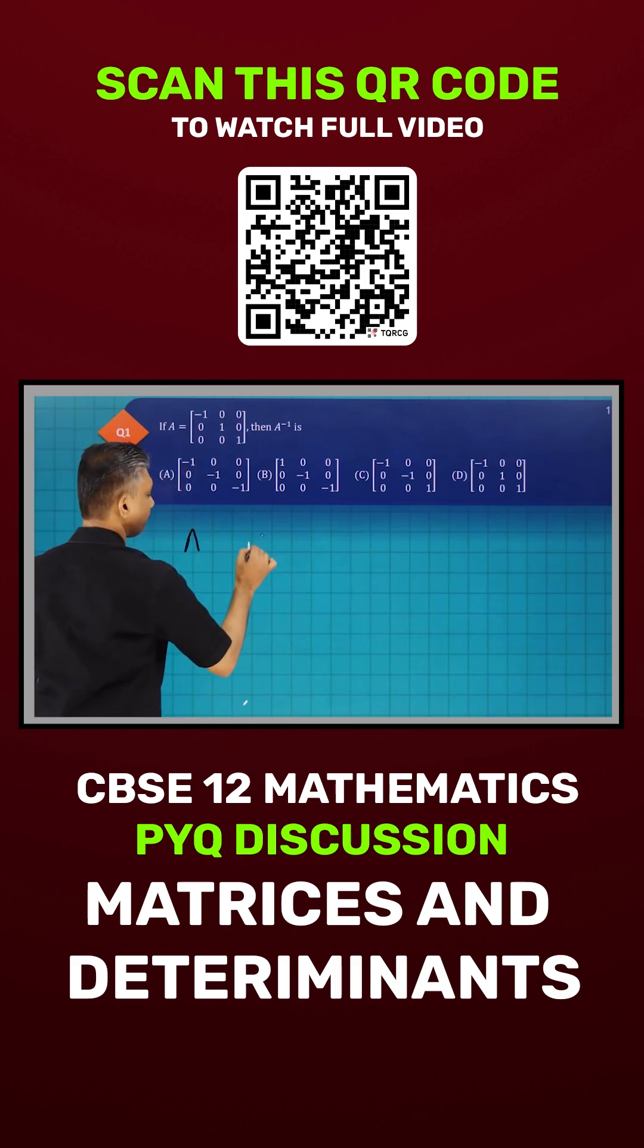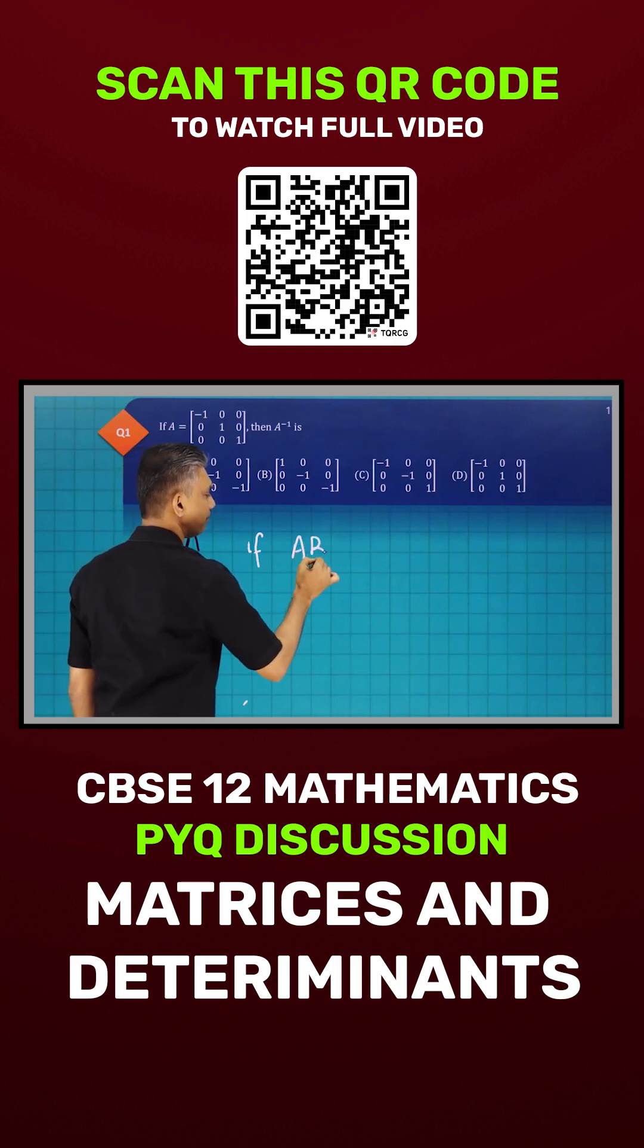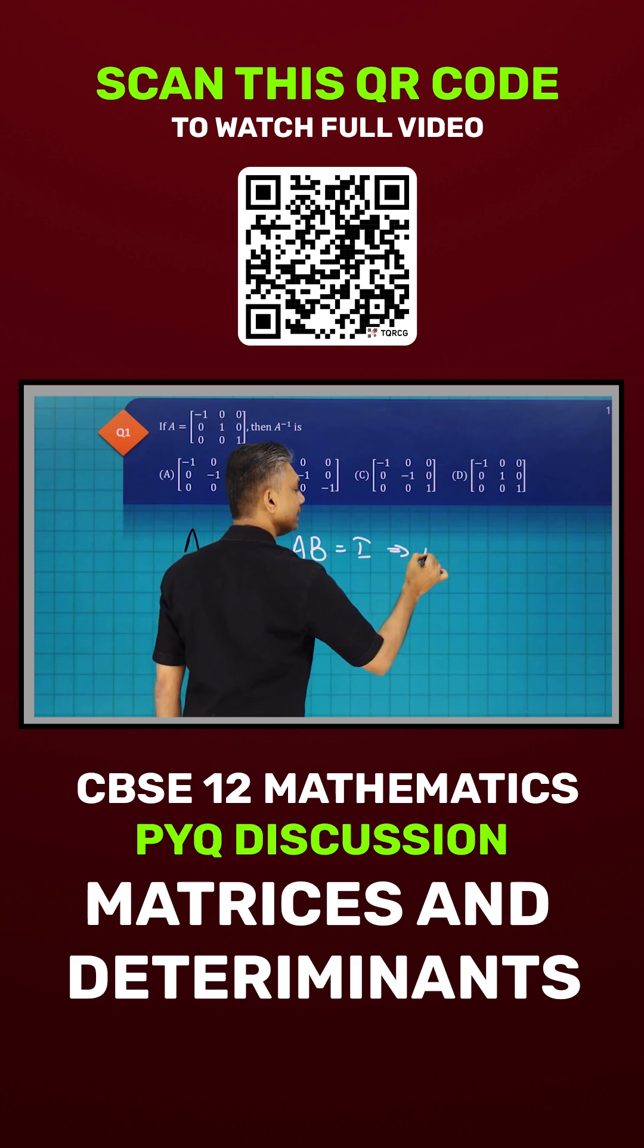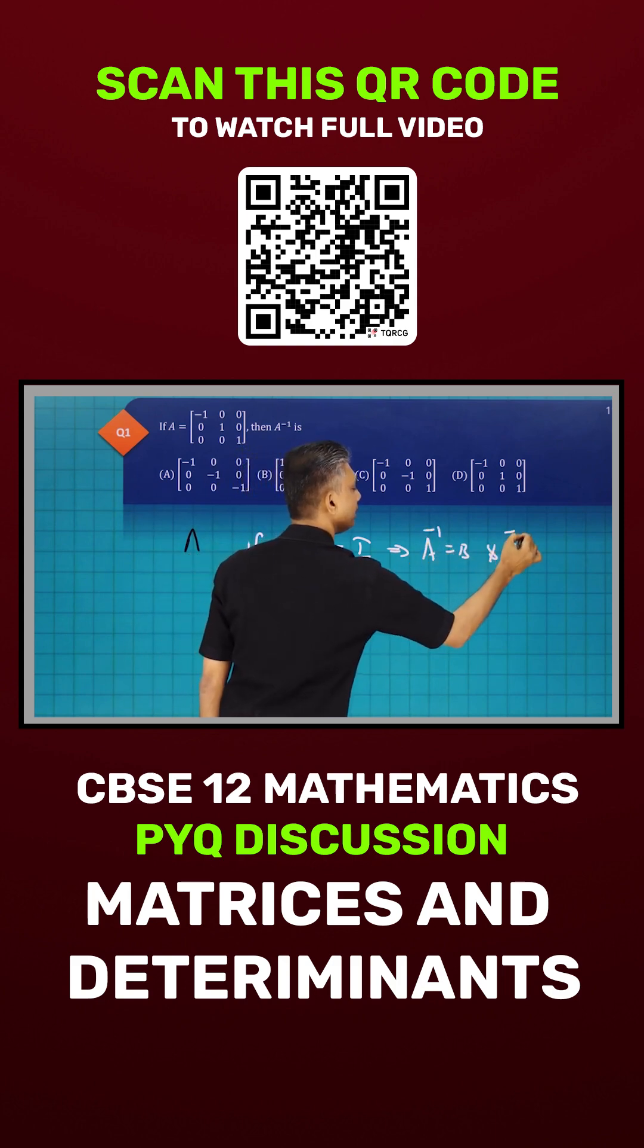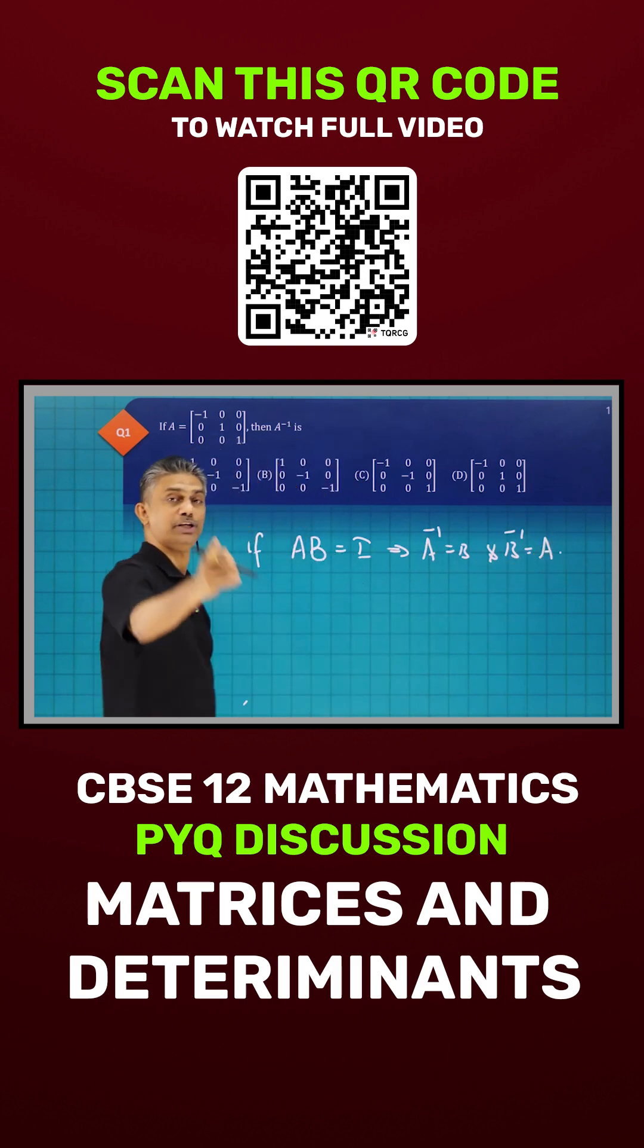So if A into B is equal to I, then we say that A inverse is equal to B and B inverse is equal to A. This is the definition of inverse.